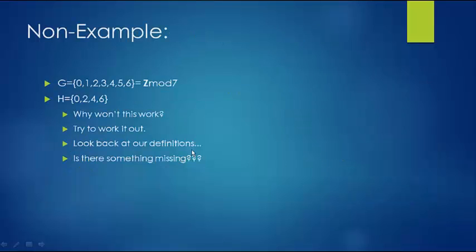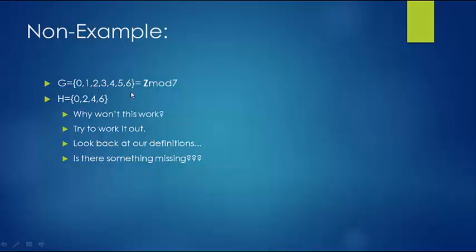Now a non-example. G = {0, 1, 2, 3, 4, 5, 6}, the integers mod 7, and H = {0, 2, 4, 6}. Why won't this work? If you try it, you'll realize quickly it fails. Looking back at our definitions, H needs to be a normal subgroup of G, but H is not a normal subgroup of G here — and we can't divide 7 evenly by 4. So this will never be possible.